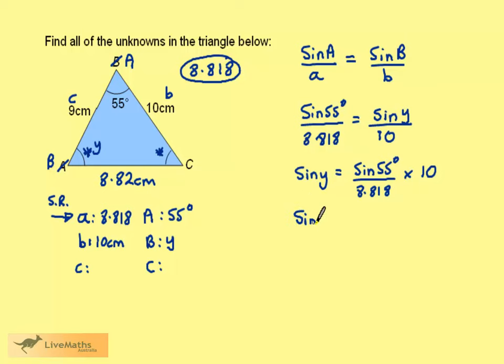Rearranging this gives sine Y is equal to the sine of 55 degrees divided by 8.818 multiplied by 10. Calculating this gives sine Y is equal to 0.928 and so on, so Y is going to be the inverse sine of this number. So Y is equal to 68.3 degrees, correct to 3 significant figures.